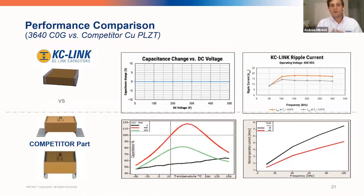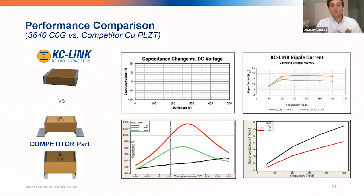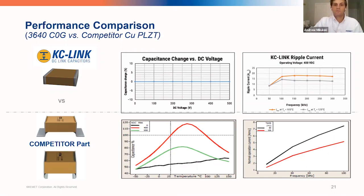Comparing our solution to a competitor PLZT solution: losses are significantly less than the competitor. The chart on the left shows capacitance remaining steady regardless of application voltage, unlike the competitor. On the ripple side, at 105°C and 125°C once you reach about 100 kHz switching frequency, our ripple current is no less than about 13–14 amps, compared to the competitor solution which does not exceed about 7.5 amps of ripple. Our ripple capability is significantly better for this ceramic solution.